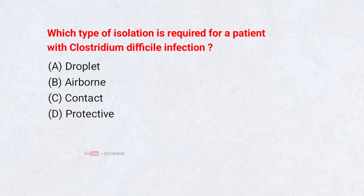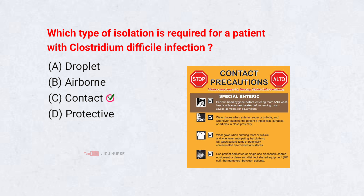Which type of isolation is required for a patient with Clostridium difficile infection? A. Droplet. B. Airborne. C. Contact. D. Protective. Correct answer: C. Contact. Clostridium difficile spreads through contaminated surfaces and spores, so gloves, gowns, and strict contact precautions are needed to prevent transmission.